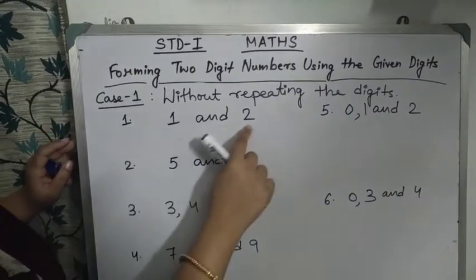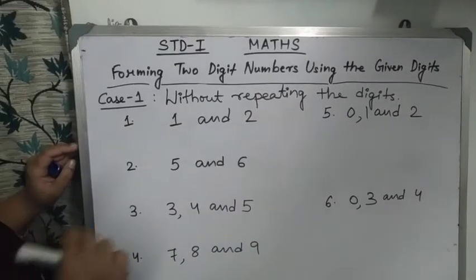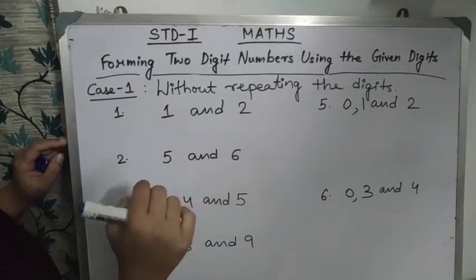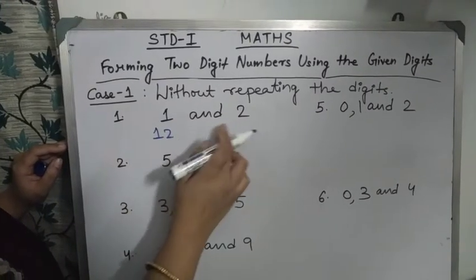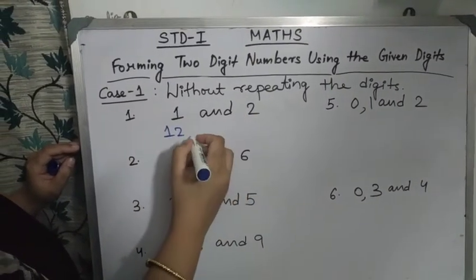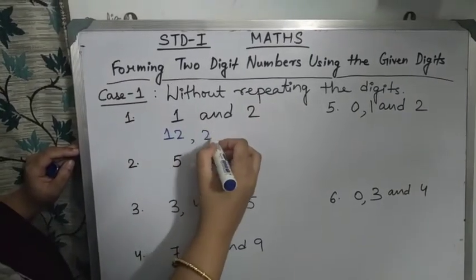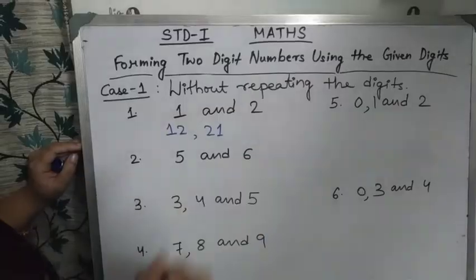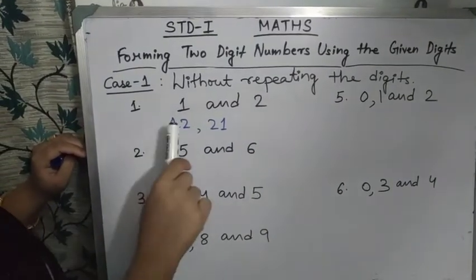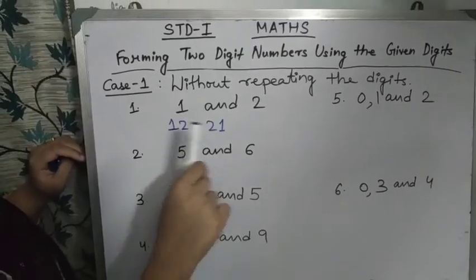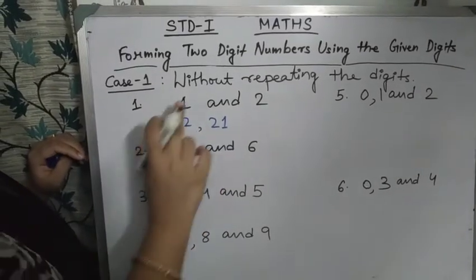Form the numbers with the help of 1 and 2. The first number will be 1, 2 — that is 12. The second number will be 2, 1 — that is 21. So we can only make two numbers: 12 and 21 from digits 1 and 2.